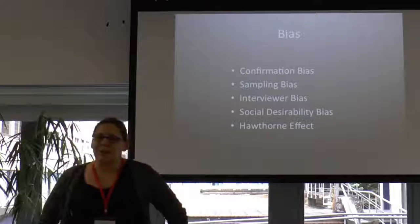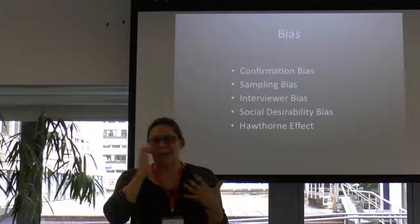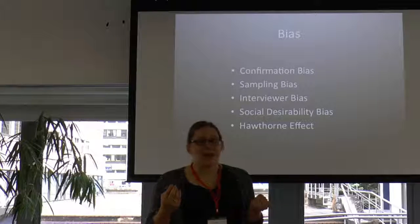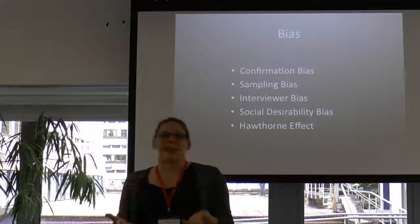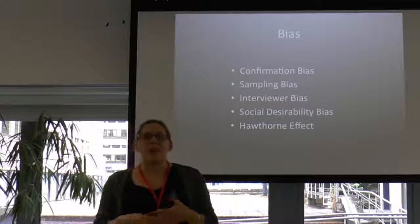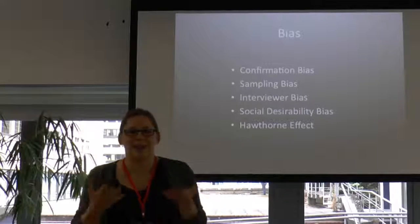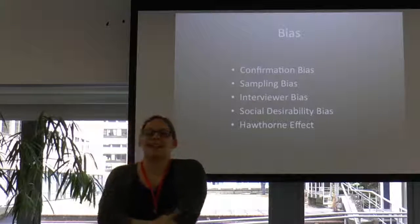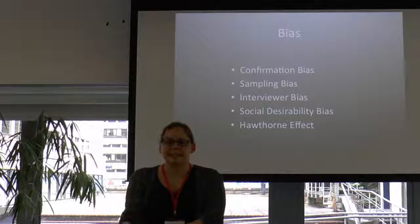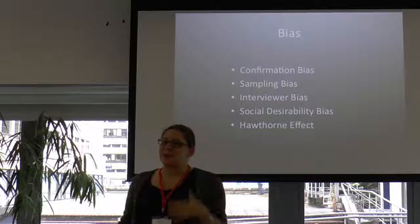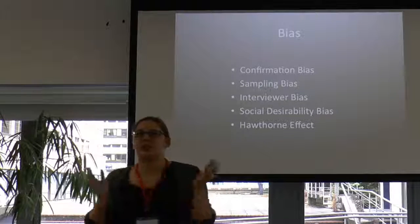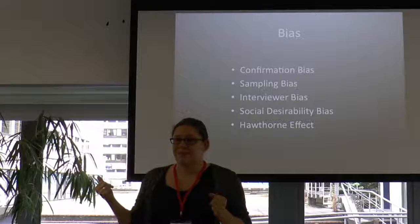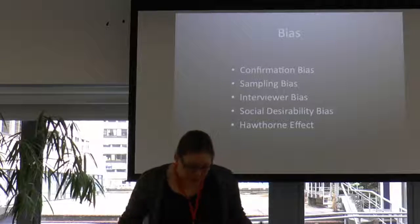Social desirability bias is something you face particularly in pre and post surveys. If you ask 'do you know how to do X, Y, and Z?', people want to tell you they do — they want to give you the answer behind the question. For example, in the United States it's very difficult to get actual data on church attendance, because when asked 'did you go to church last weekend?', people will say yes even if they didn't, because they're answering the implied question: 'are you a religious person?'